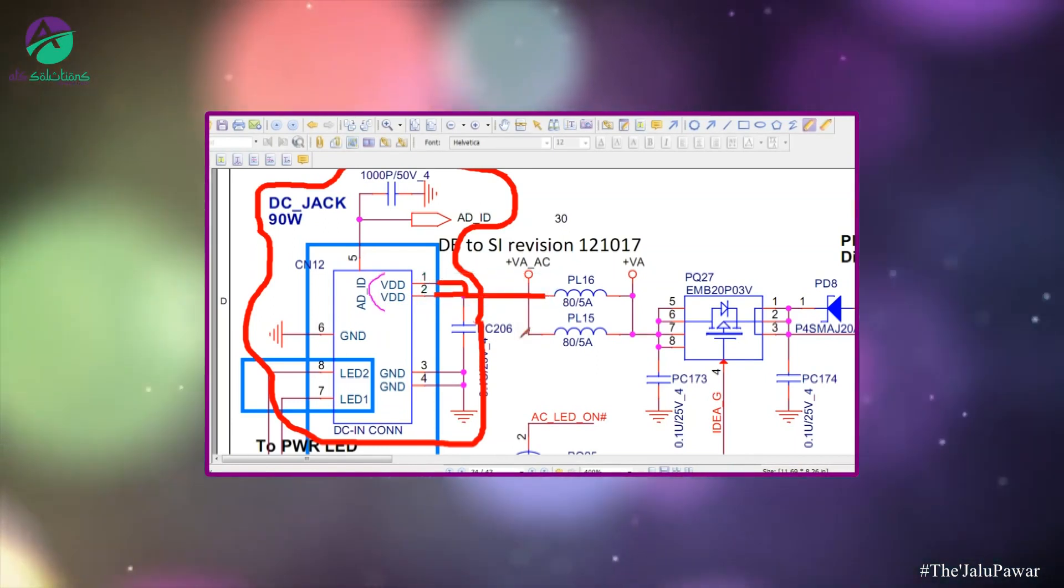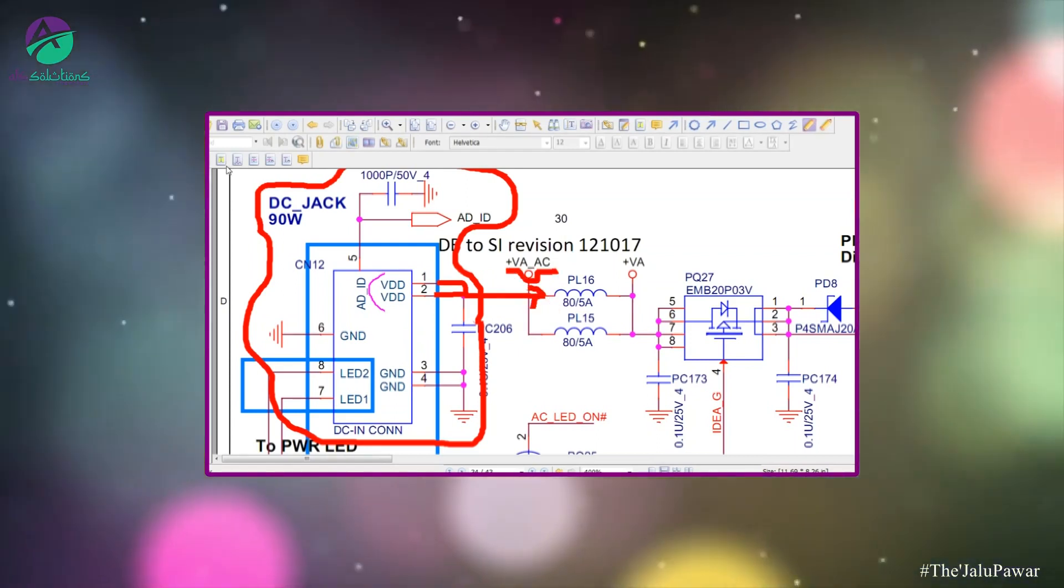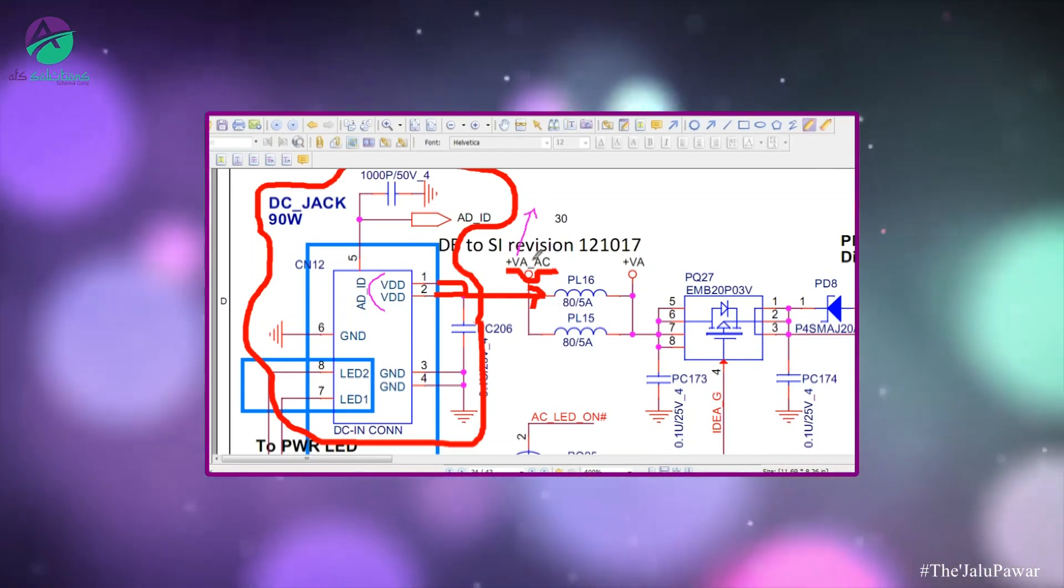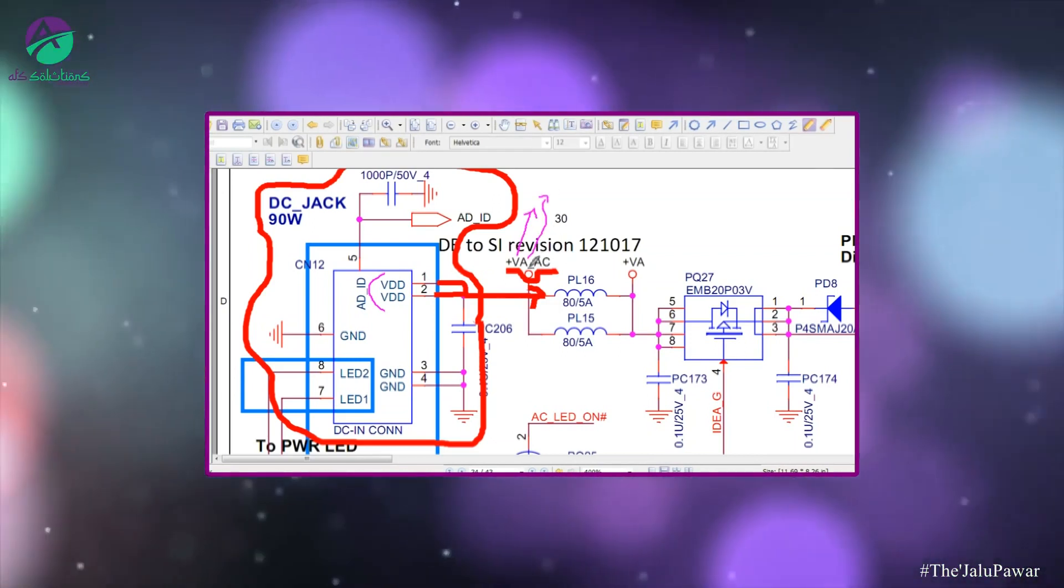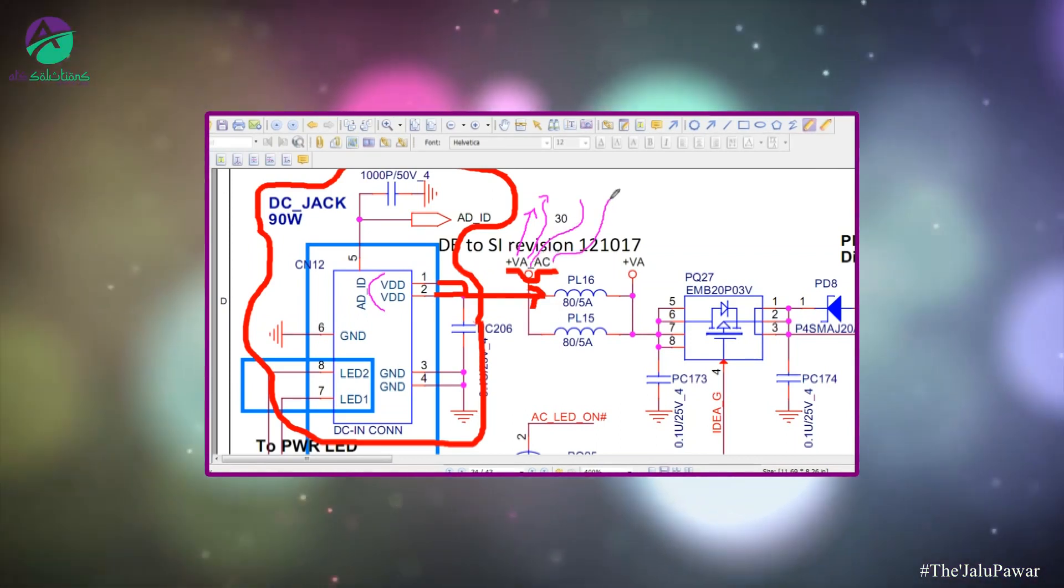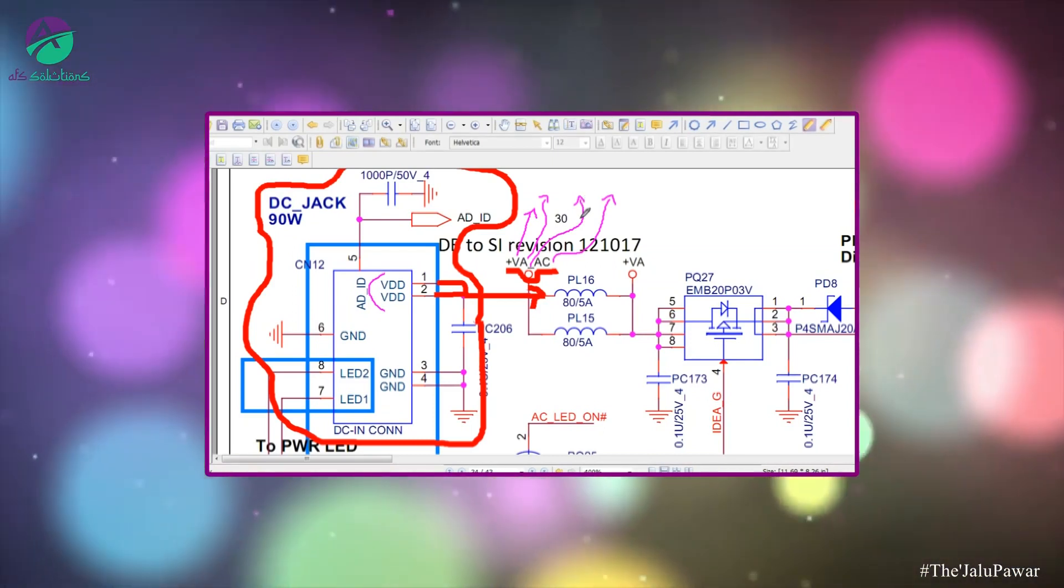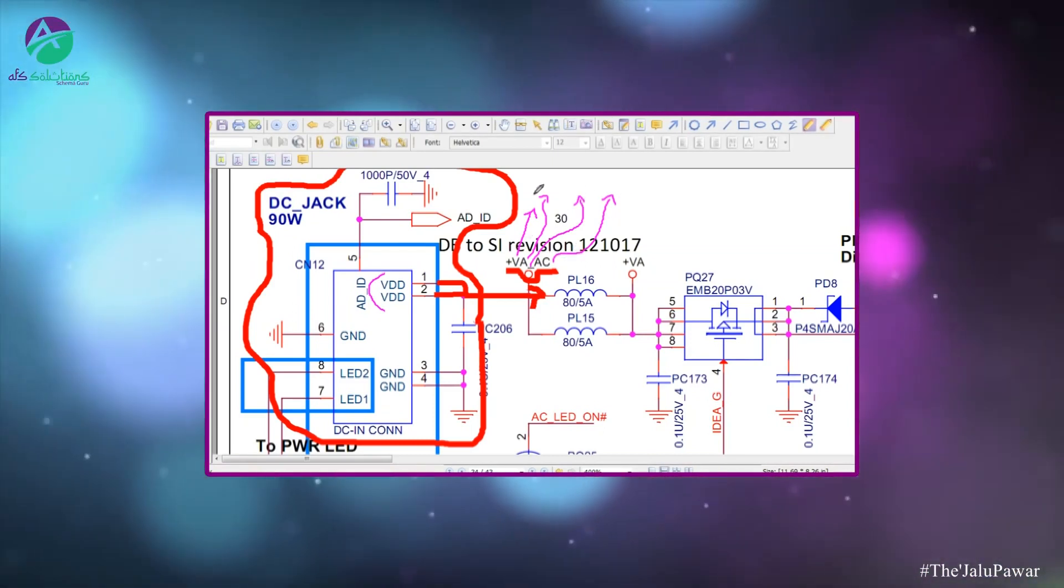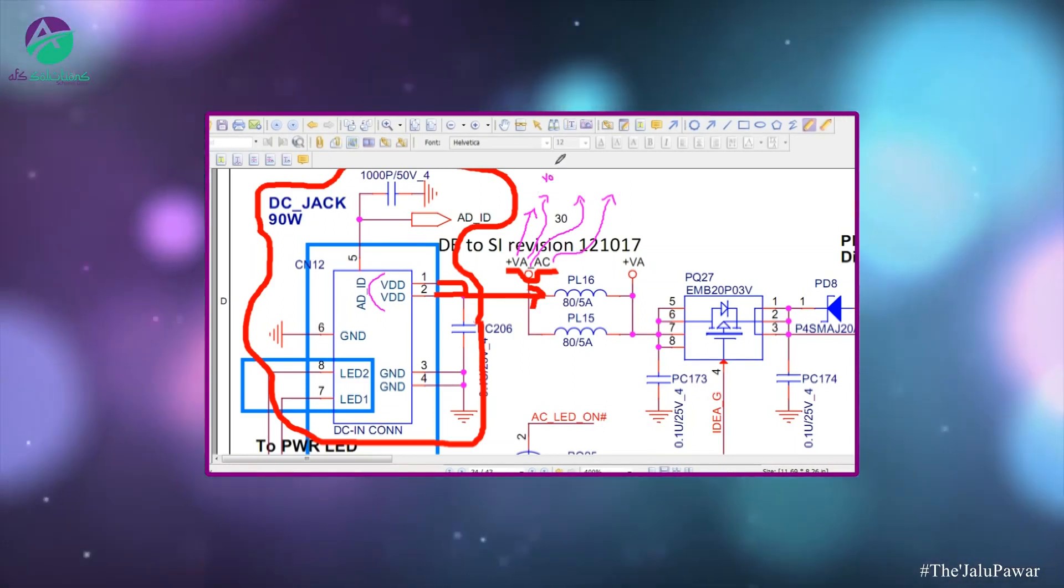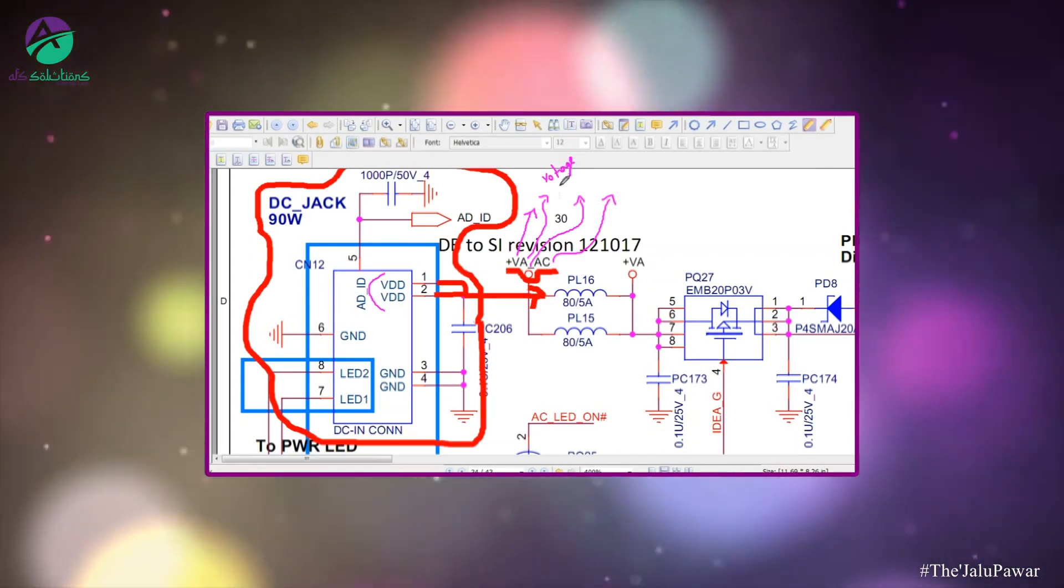These drive voltages are going forward and stopping at plus VA underscore AC. Means positive voltage, ampere, it is passing and AC, which is coming from an alternate circuit. That means it is trying to tell me that my voltage is coming.